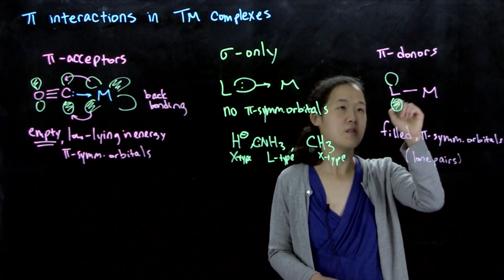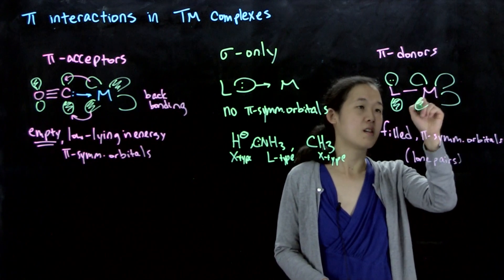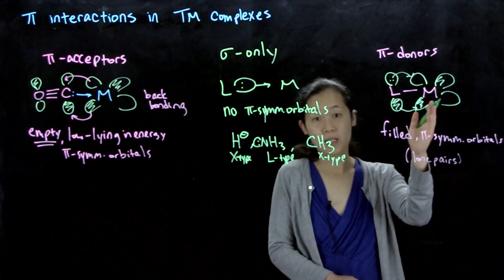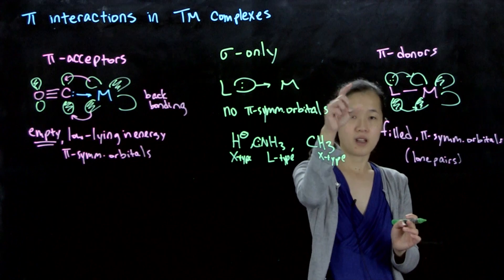When we have our filled pi-symmetry orbital, which I'll just draw as a p-orbital, this is filled. And then this can donate into the empty d orbital of a metal. This is not backbonding because we're going from ligand to metal like normal.